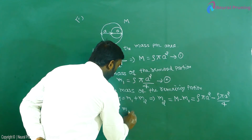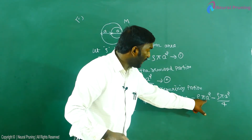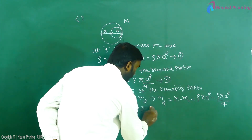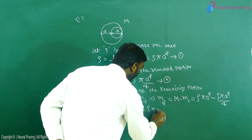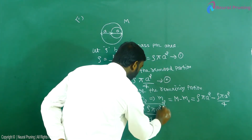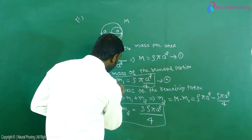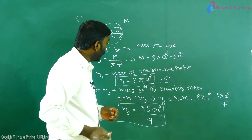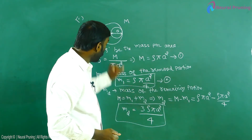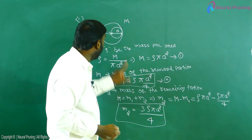So m2 equals ρπa² minus ρπa²/4, which gives m2 = 3ρπa²/4. Now observe clearly: m1 is the mass of the removed portion, and m2 is the mass of the remaining portion.